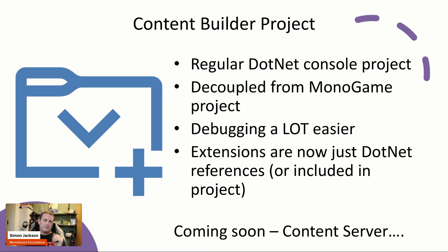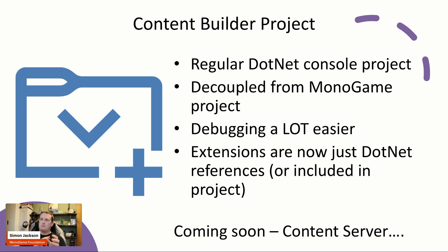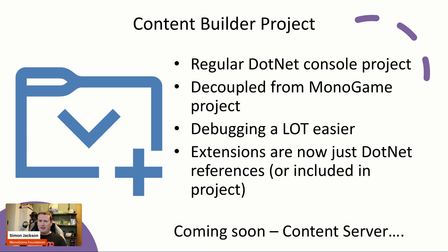We need you out there testing this, playing with your projects, trying it out. One thing that hasn't made the cut for 3.8.5 but has promise is what we've defined as a content server. Instead of having to keep rebuilding, your content actually becomes a runtime project — as you change the content it gets updated and your game uses it. Your game talks to the server for assets, and the server looks at the content; if things change it updates in real time.